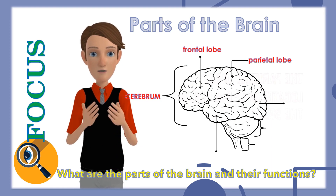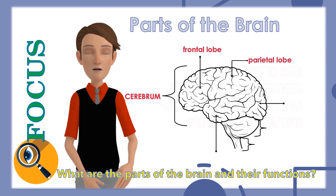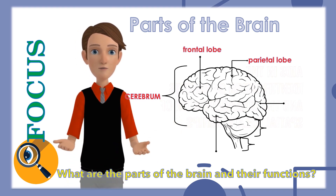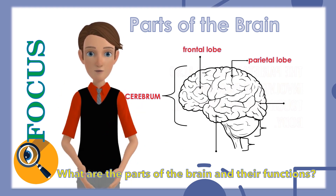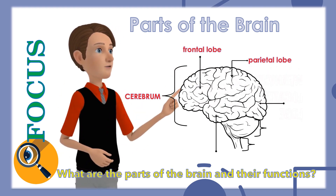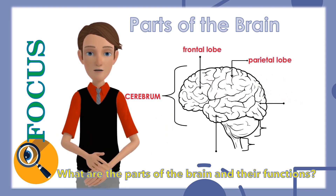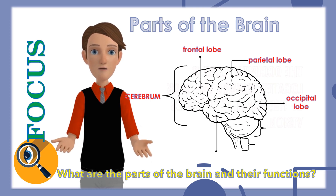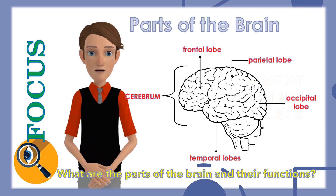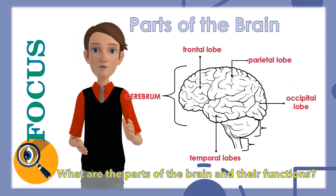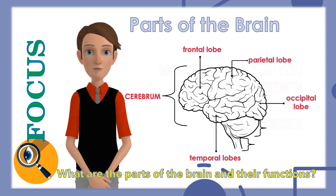The parietal lobe, located in the middle of the brain, aids in the identification of objects and the comprehension of spatial relationships. The parietal lobe is also involved in pain and touch perception. Wernicke's area is located in the parietal lobe and aids the brain in understanding spoken language. The occipital lobe is located toward the back of the brain and oversees vision. The temporal lobes are located on the brain sides and help with short-term memory, speech, musical rhythm, and some smell recognition.